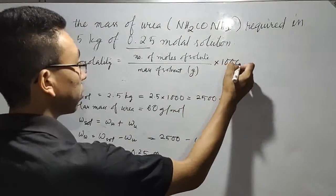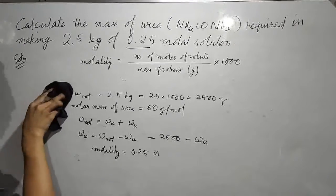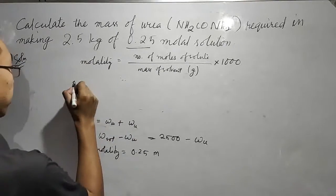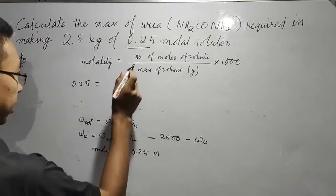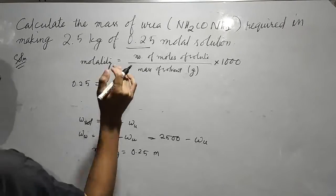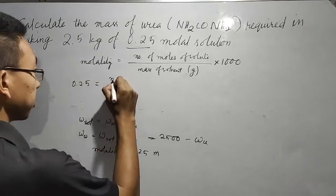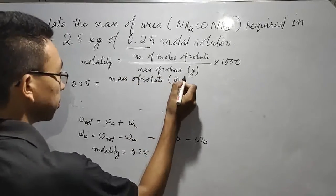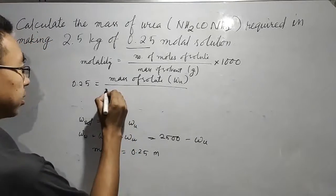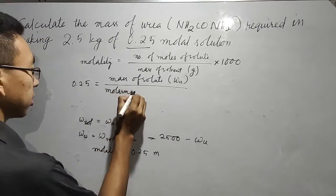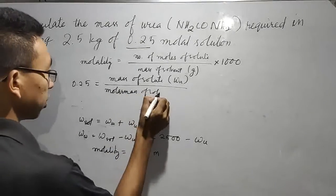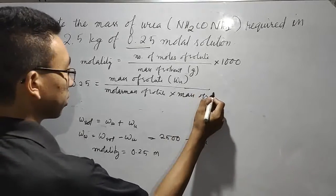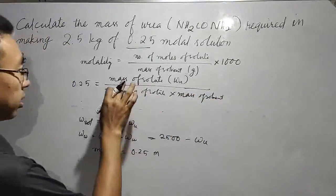Molality is 0.25. Number of moles we know is mass of solute divided by molar mass. So mass of solute, this is W_u, divided by molar mass of solute and multiplied by 1,000, divided by mass of solvent.